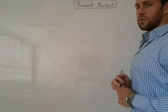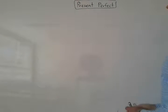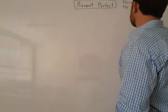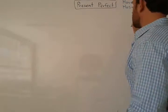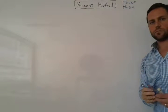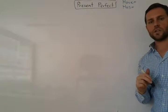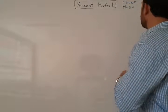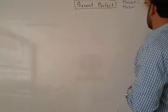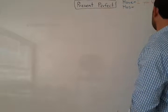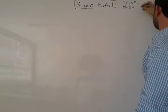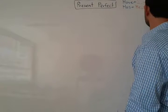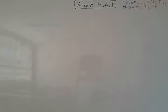Present perfect — dos verbos. Auxiliar un verbo: have, has. Estos no es para tener. Estos para describir presente perfecto en tiempo. So, un ejemplo: have I, have you, have we, have they. Has he, she, it. These are your forms.